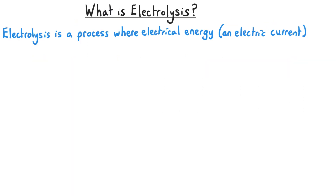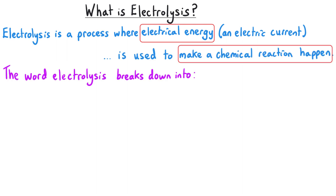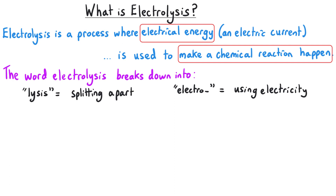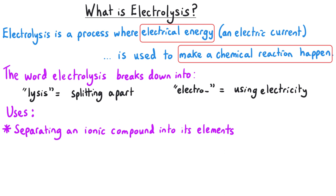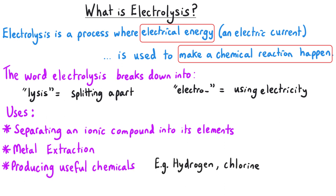Electrolysis is a process where electrical energy, or an electric current, is used to make a chemical reaction happen. The word breaks down into two parts: lysis means splitting apart, and electro means using electricity, so together we are splitting things apart using electricity. We use electrolysis to separate an ionic compound into its component elements, for metal extraction of particularly high reactivity metals, to produce useful chemicals like hydrogen and chlorine from the electrolysis of salt water, and also for electroplating.